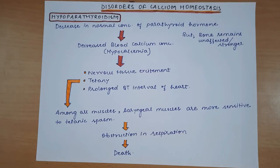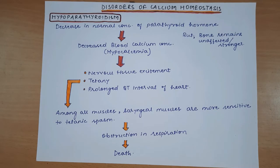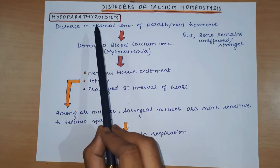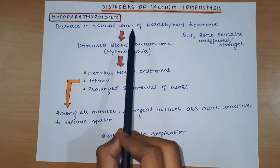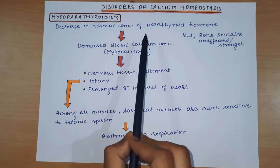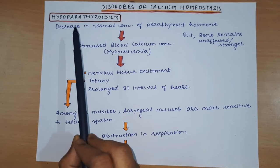In this video we will be discussing the two main important disorders of calcium homeostasis, that is hypoparathyroidism and hyperparathyroidism. First, we will discuss hypoparathyroidism. As the name suggests, the normal concentration of the parathyroid hormone decreases - this condition is called hypoparathyroidism.